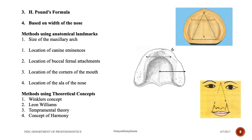H Pound's formula is similar to Berry's biometric index; he used facial length divided by 16. However, facial length is still variable and not reliable. Based on the width of the nose: use a vernier caliper to measure the nasal width, transfer this onto the occlusal rims, and measure along the occlusal rim — this gives the combined width of the upper maxillary anterior teeth.